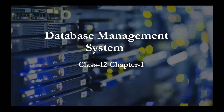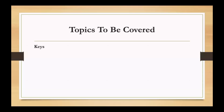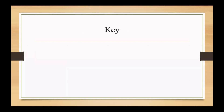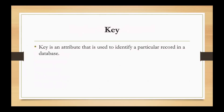Hello everyone, this is the 7th video of database management system. In this video, I am going to cover a few topics. The first topic is: what is the candidate key? What is the primary key? What is the super key? What is the alternate key? And what is the foreign key?